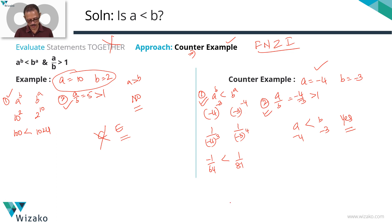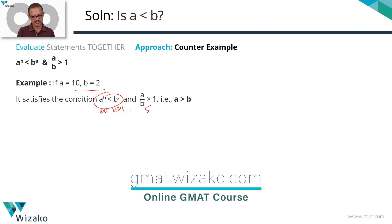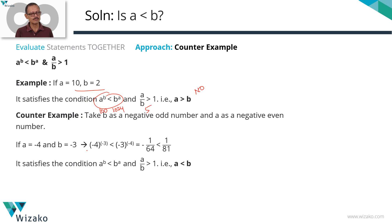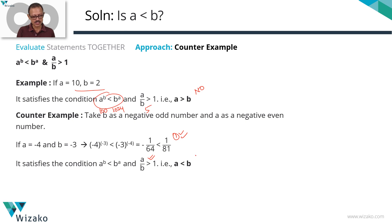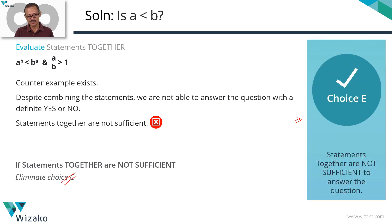To summarize: with a = 10, b = 2, both statements hold and a > b giving a no. With a = -4, b = -3, both statements hold and a < b giving a yes. Despite combining the two statements, we cannot conclude whether a is less than b. Statements together are not sufficient — eliminate answer option C. E is the correct answer.